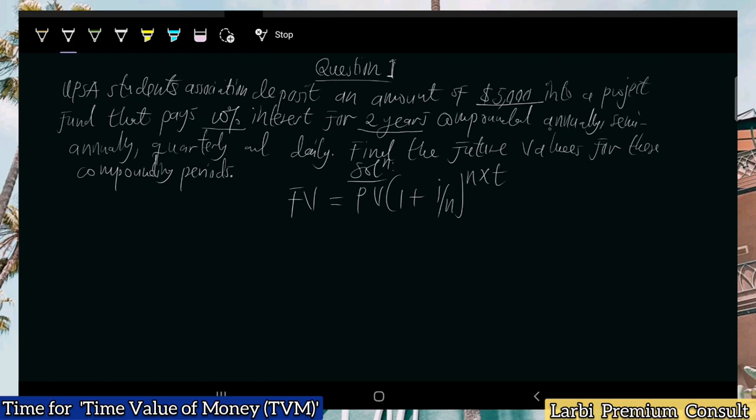The compounding periods begin with annually, then semi-annually, quarterly, and daily. We are going to compute the future values corresponding to each of these compounding periods, in line with the interest rate, principal, and time horizon.